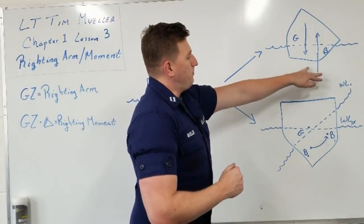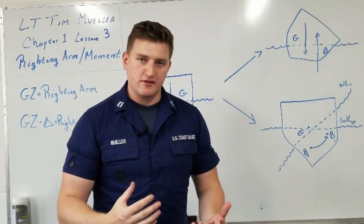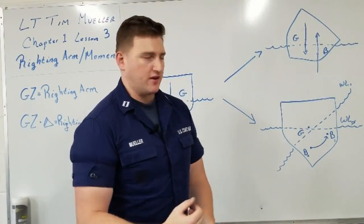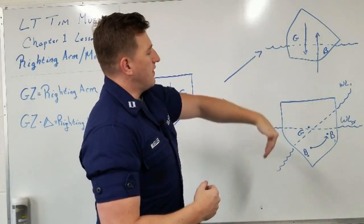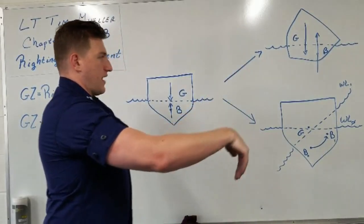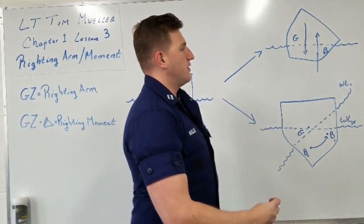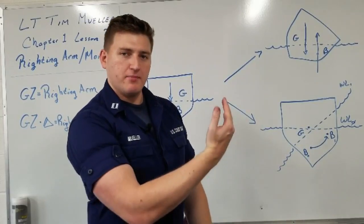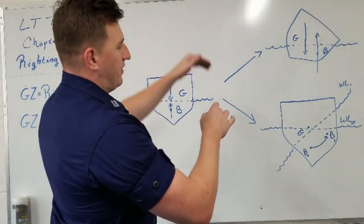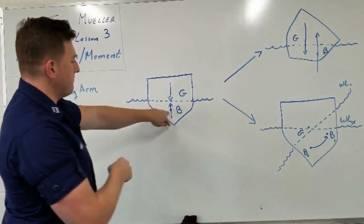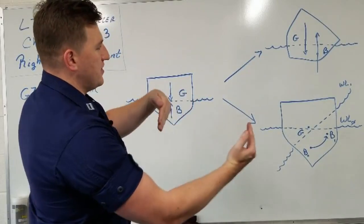We know that B is going to swing out, but the center of gravity — assuming no cargo shifts or anything strange happens with the vessel — is going to stay the same. The center of gravity stays the same, the force of gravity still acts through the center of gravity, the center of buoyancy swings over, and the force of buoyancy always acts up through the center of buoyancy. So now we have two arrows of the same magnitude as before, but they're not directly opposing each other — there's a distance between them.